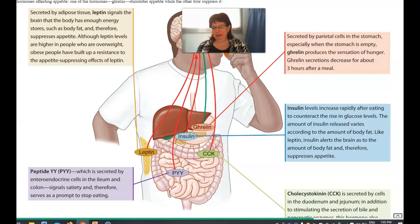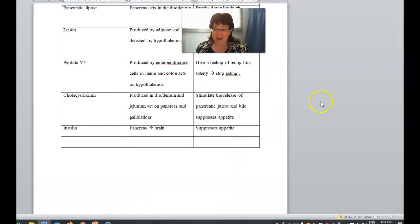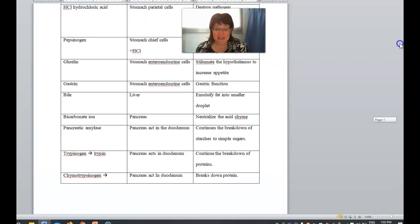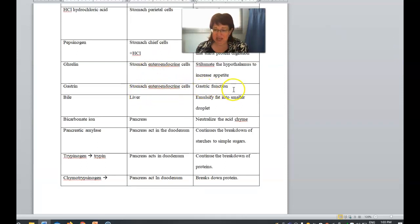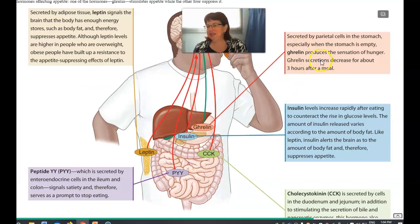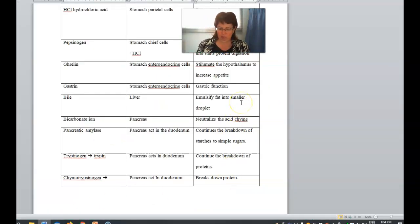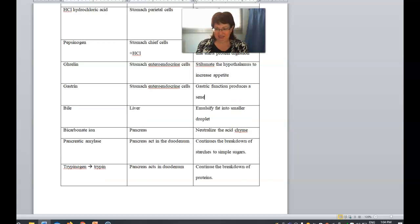They think that one of the reasons why people become obese is the fact that this insulin resistance or this ghrelin resistance decreases. We've talked about ghrelin before. Secreted by the parietal cells of the stomach, especially when the stomach is empty. Ghrelin produces a sensation of hunger and ghrelin secretions decrease about three hours after a meal. It produces a sensation of hunger.